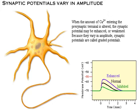When the amount of calcium entering the presynaptic terminal is altered, the synaptic potential may be enhanced or weakened. Because they vary in amplitude, synaptic potentials are called graded potentials.